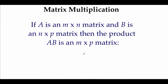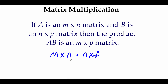Matrix multiplication is a little bit different than scalar multiplication — we're going to be taking a matrix times another matrix. If matrix A has the order m by n and matrix B has the order n by p, then the result of A times B is going to be an m by p matrix. Writing down their orders helps figure out the order of the new matrix: A is m by n, B is n by p, those n values in the middle must be the same, and the result is a new matrix with order m by p.